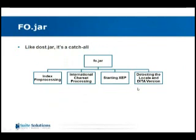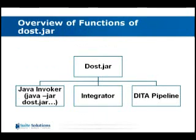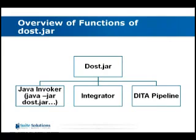In summary: we discussed the Java Invoker, which is basically a wrapper around the rest of the DITA OT. We discussed the Integrator, which plugs all the plugins in — it takes templates and inserts the different pieces of each plugin wherever appropriate. The plugin.xml file tells integrator what needs to be plugged in, the template files tell it where to plug it in, and the Java code actually does the plugging. Finally, we discussed the various pipeline modules of the DITA OT that are all defined in dost.jar.